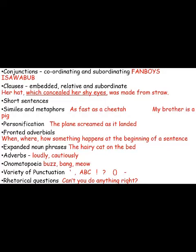Next, clauses — you might have gone one step further by talking about embedded, relative, and subordinate clauses. These add extra pieces of information into your text using brackets, dashes, or commas. An embedded clause is like the example: 'Her hat, which concealed her shy eyes, was made from straw.' That is sandwiched in the middle of the main clause. It is also a relative clause because it contains the word 'which'.